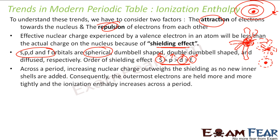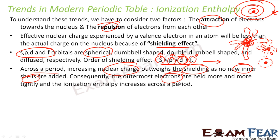Across a period, the increase in nuclear charge is so high that it outweighs the shielding effect. There is very minimum shielding effect because no extra shell is added — only extra orbitals are added — but the shielding effect is not that much because extra shells are not added. Thus, the outer electrons are held more tightly.